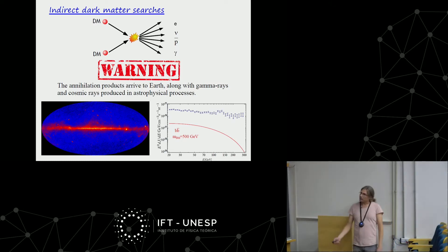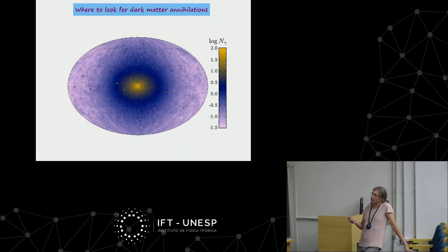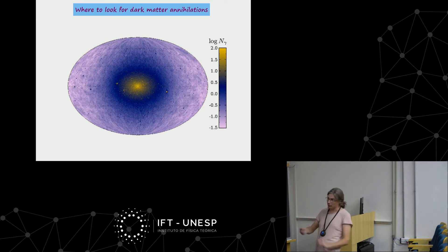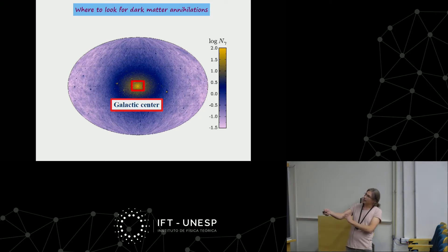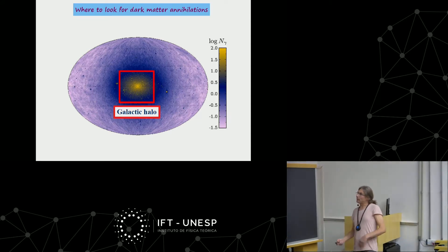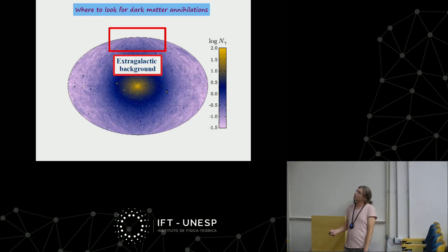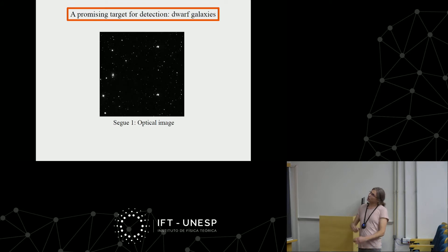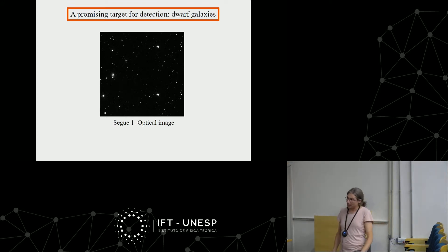Understanding the background to the 10% or 1% level is needed to distinguish this signal, but it is not impossible. One has to be clever about choosing target regions. A sky map shows the best targets: the galactic center is brightest but has the largest background; Milky Way satellites are good targets; one can also extend the search to the galactic halo with different search strategies.